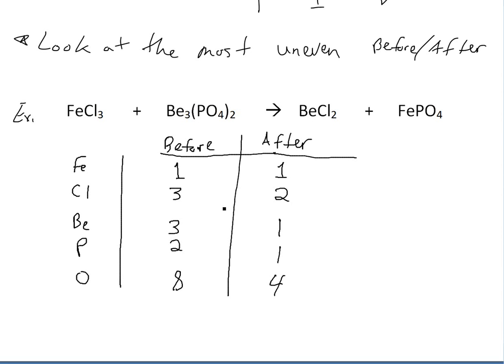So again we look at the hardest or the most uneven before after. So this one looks like eight four or actually one three. These are all pretty even. This one needs to change. We'll start off with the Cl because it's three and a two. So we'll look at what's the common number that it can both reach.